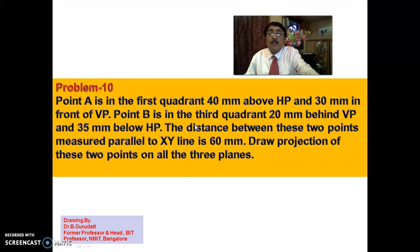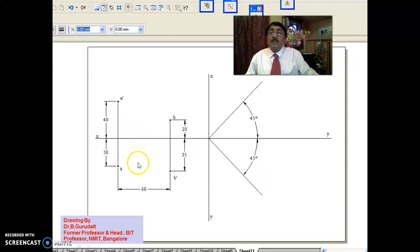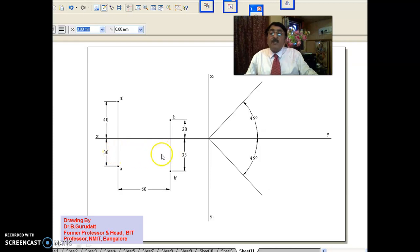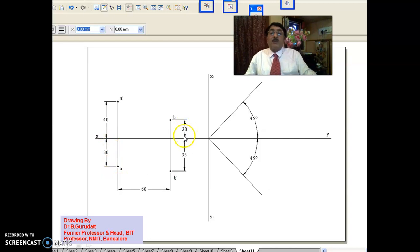The distance between these two points measured parallel to XY line is 60mm. A projector is a line connecting the top view and front view of a point — so A and A-dash form one projector, B and B-dash form another. The distance between these two projectors measured parallel to XY line is 60mm. Draw a 45-degree line and draw the corresponding side views as asked.